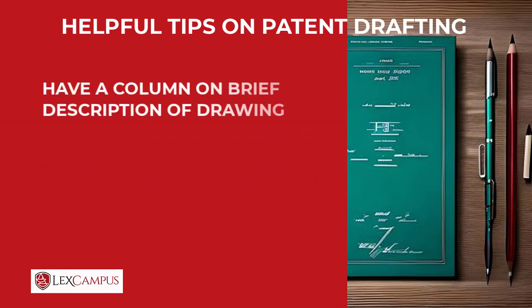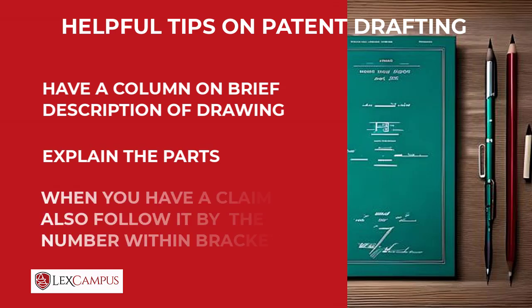One: have a heading or paragraph on brief description of drawing where you describe all the figures. Two: explain the parts — the parts will be numbered, but you will have to name them, what each part is. And three: when you have a claim, cross-refer — whenever a part is mentioned in the claim, follow it with the corresponding number within brackets. So when you have a drawing question, these are the three things to take care of.